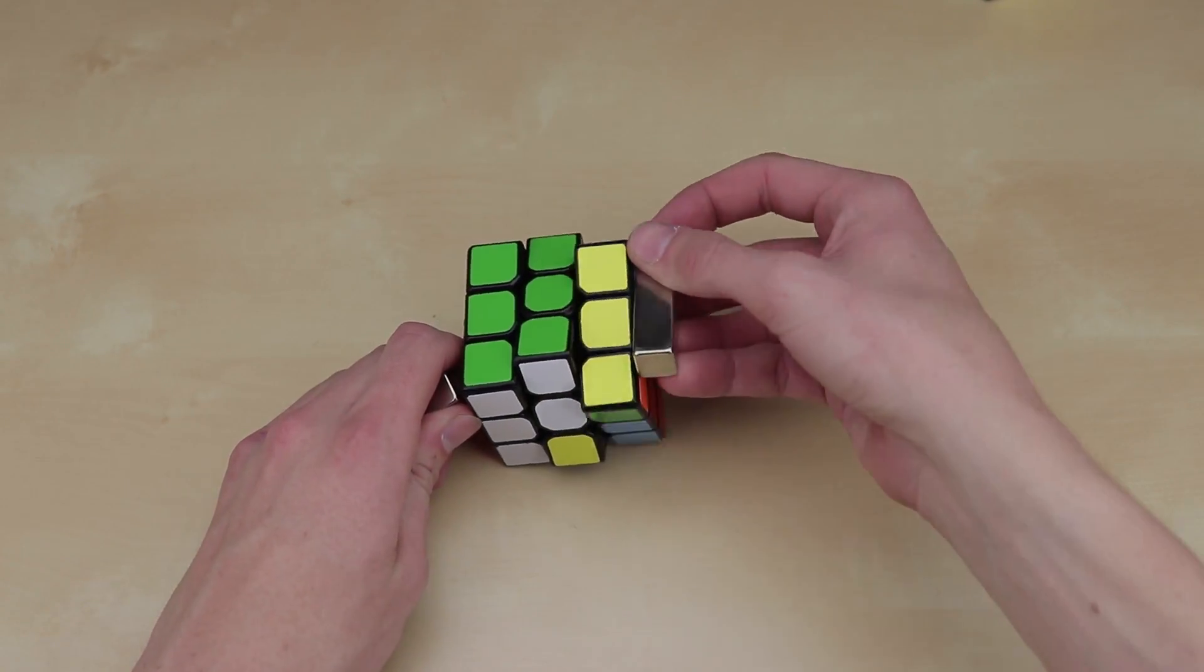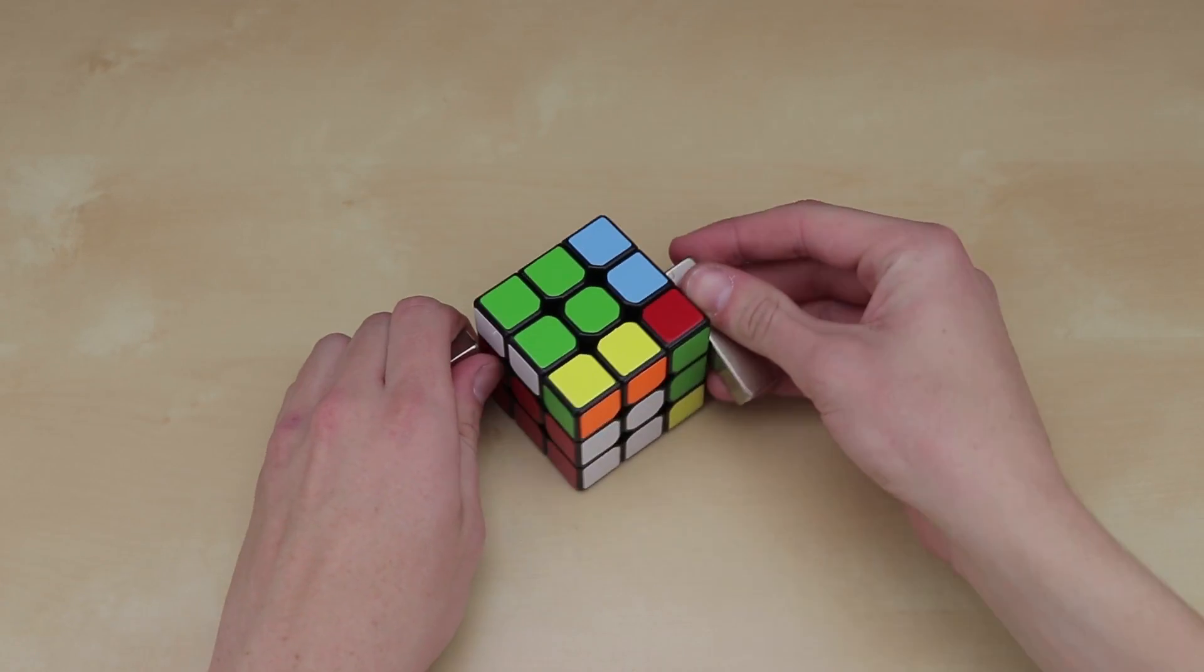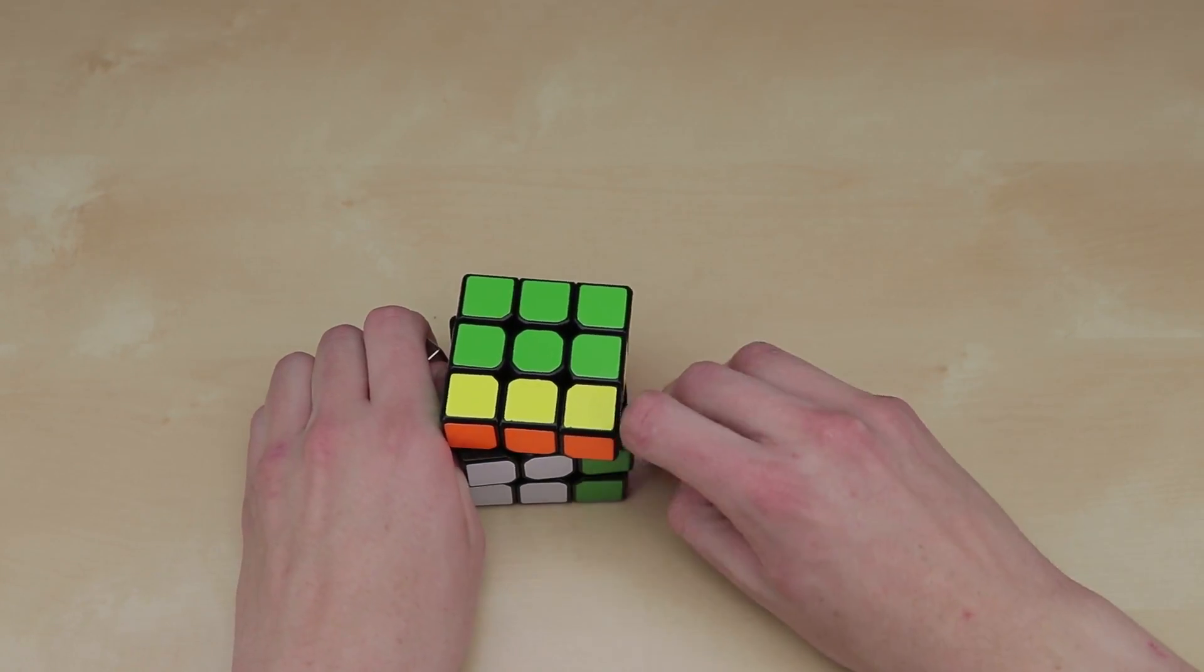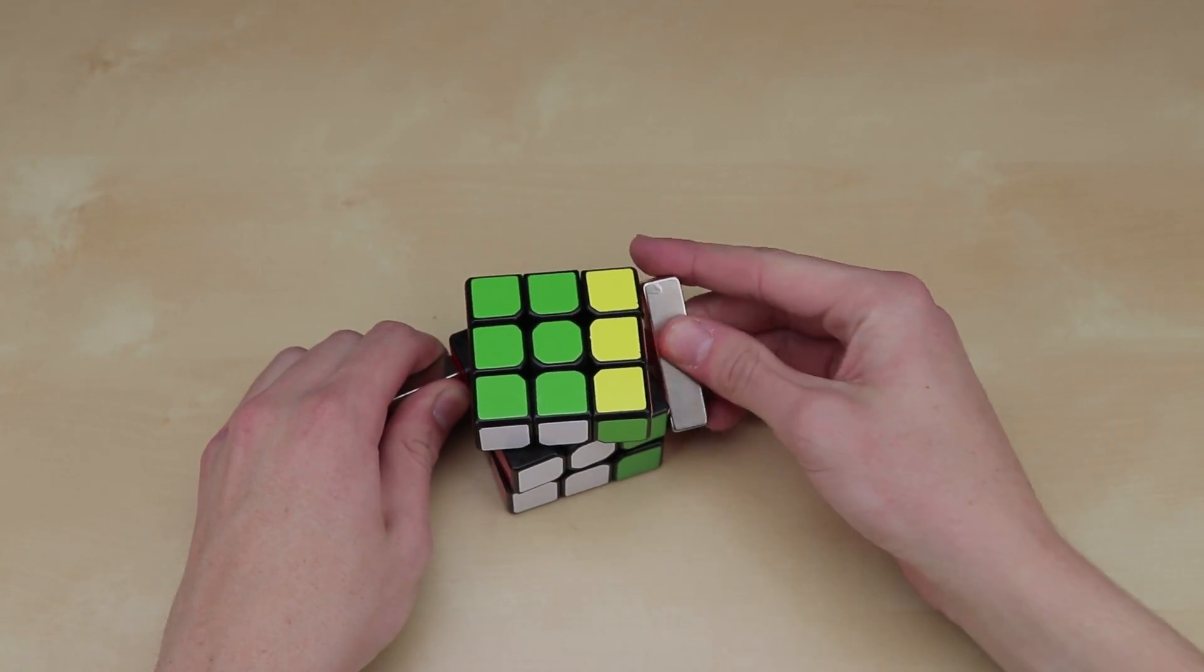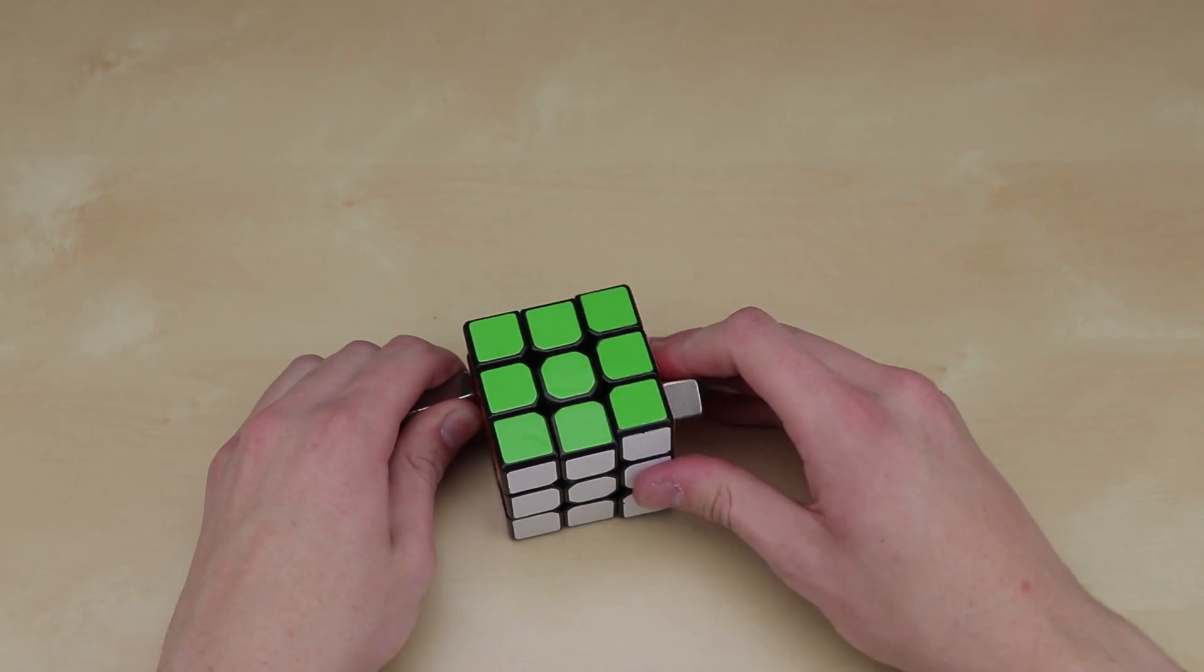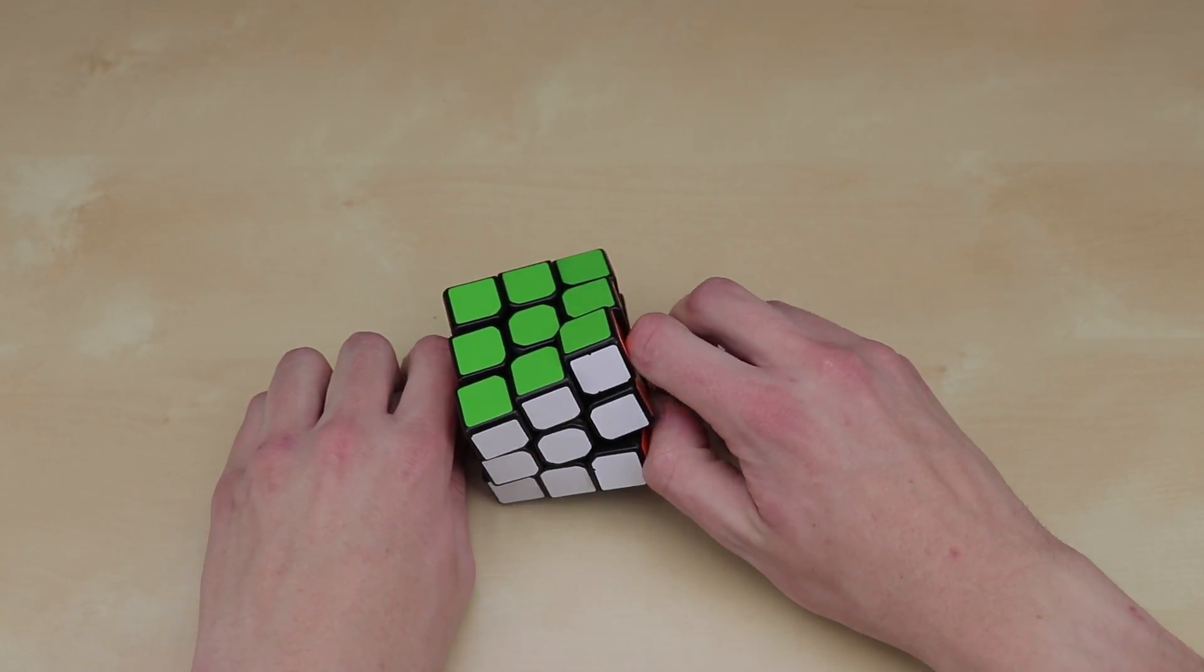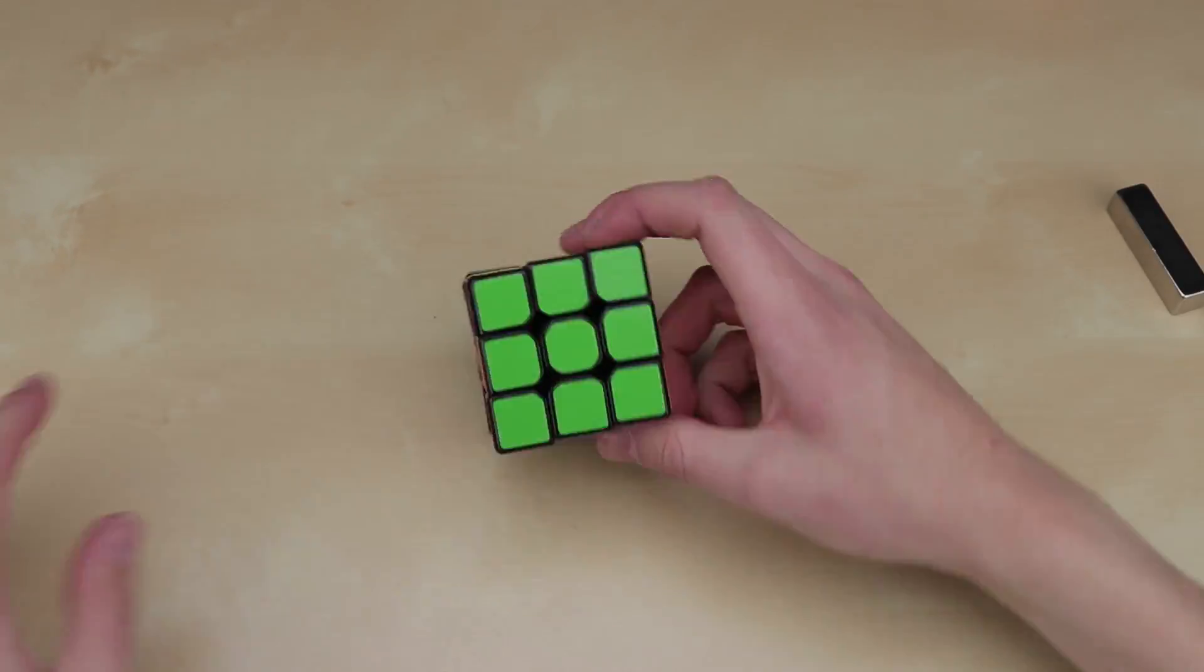And now a quick R move like this. Do a quick U move by putting this magnet on the top here, moving it around. And then one last R move to solve the cube once and for all using only magnets.